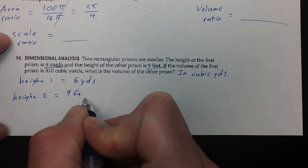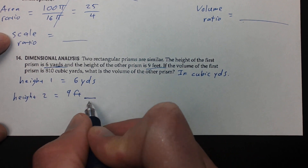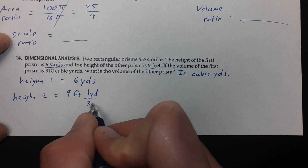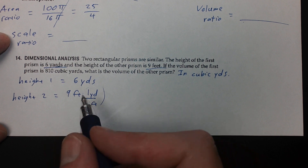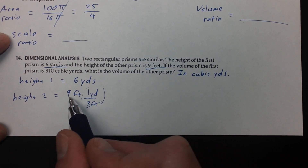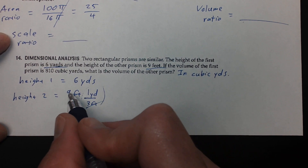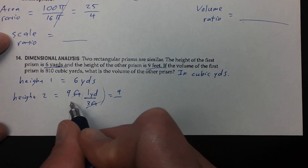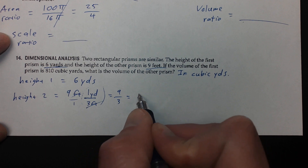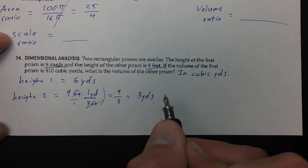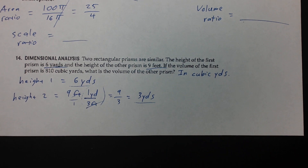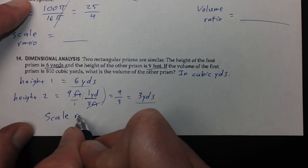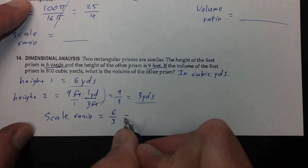The only outlier we need to change is converting 9 feet into yards. Height number one is 6 yards; height number two is 9 feet. To convert feet to yards: 1 yard equals 3 feet. Using the conversion factor, feet cancels feet and you're left with yards. 9 times 1 over 3 gives you 3 yards. So if your first height is 6 yards and your second height is 3 yards, from there you can get your scale ratio — 6 over 3, which reduces to 2 to 1.